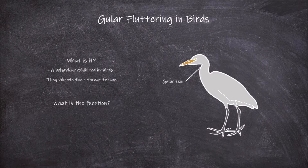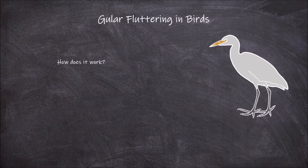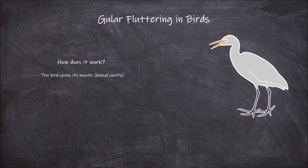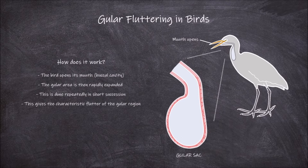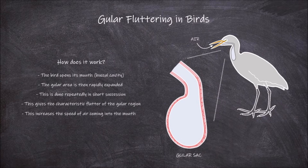Gula fluttering functions as a cooling mechanism as it dissipates heat when a bird is too hot. During gula fluttering the bird will open its mouth, also known as the buccal cavity. The gula area or sac is then rapidly expanded, done repeatedly in short succession, giving the characteristic flutter of the gula region. This rapid expansion of the area increases the speed of air coming into the mouth and through it.